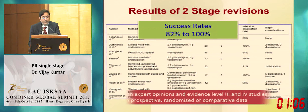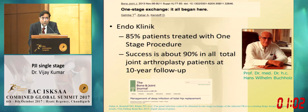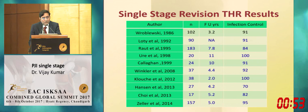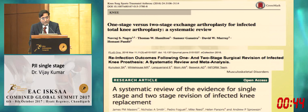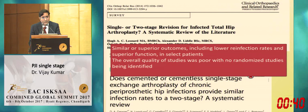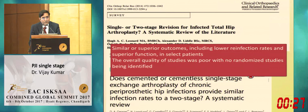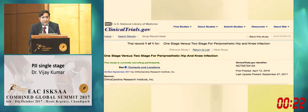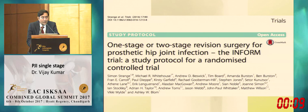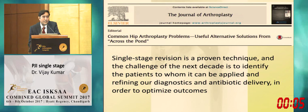Results of two-stage have been the gold standard — though all are level three and four studies. Single-stage, started at the Endo-Klinik, shows around 85% of patients treated with one stage and 90% success. Other authors report 70% to 100% infection control in both THR and TKR. Meta-analyses and systematic reviews — three for knee, two for hip — show similar or superior outcomes with single-stage, with lower infection rates and superior function, but only in carefully selected patients. Two RCTs are currently recruiting: one from OrthoCarolina Institute and one from the Bristol Hips Unit.